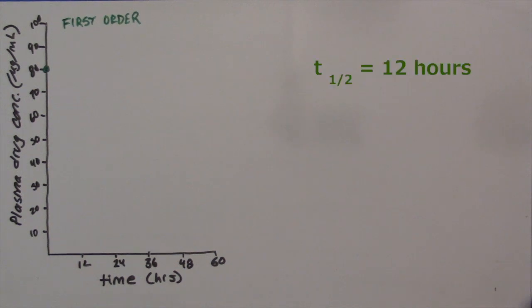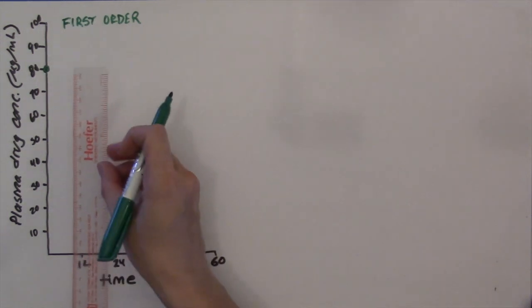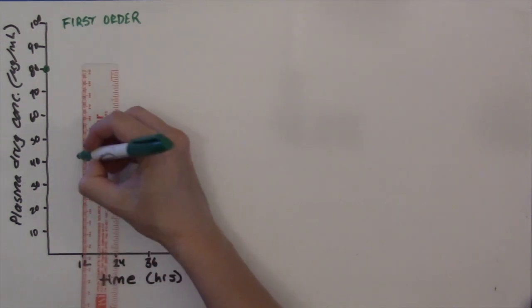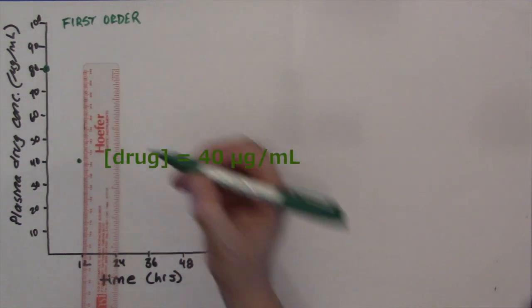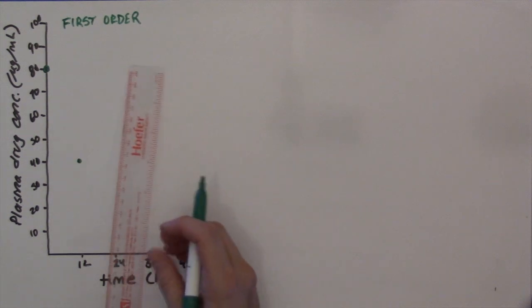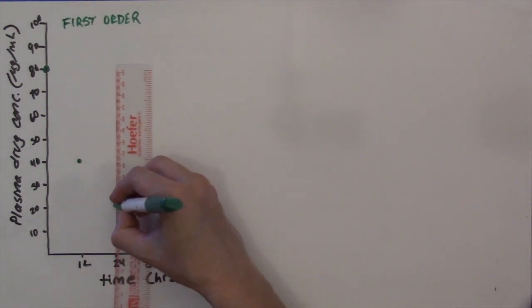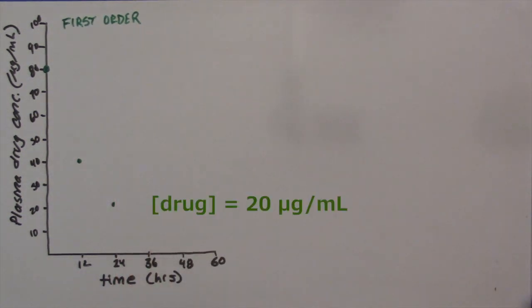Now let's say that our drug has a half-life of 12 hours. This means that every 12 hours, the blood concentration will decrease by half. So 12 hours after the drug is administered, our blood level is down to 40 micrograms per milliliter. And another 12 hours — that is two half-lives after drug administration — it has decreased by half again, to 20 micrograms per milliliter.